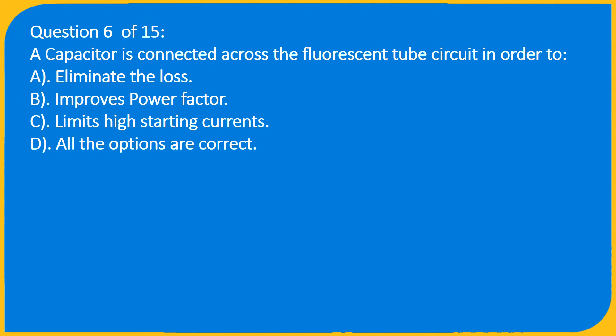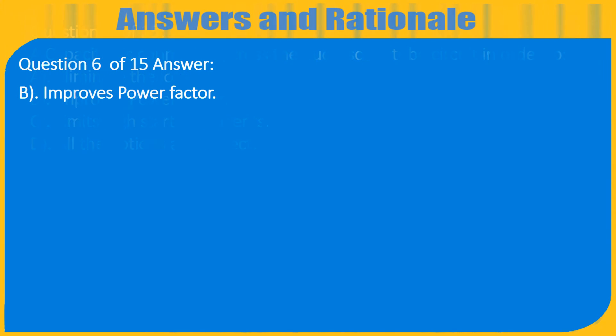Question 6 of 15: A capacitor is connected across the fluorescent tube circuit in order to A. Eliminate the loss, B. Improves power factor, C. Limits high starting currents, D. All the options are correct. Answer: B. Improves power factor.